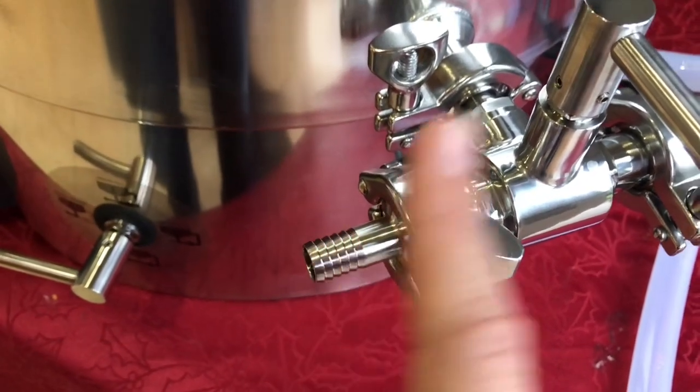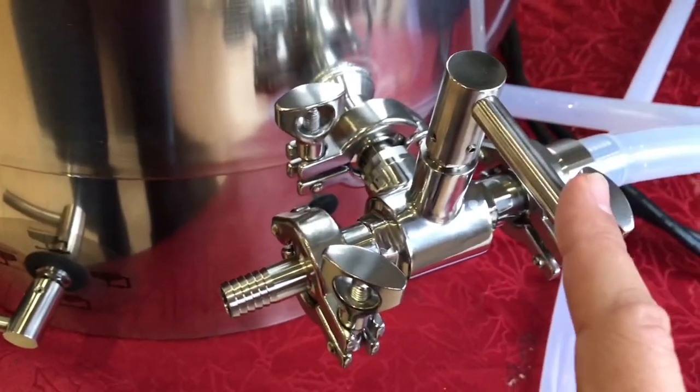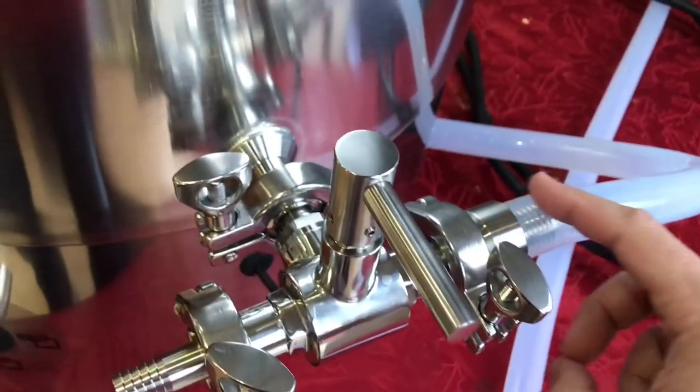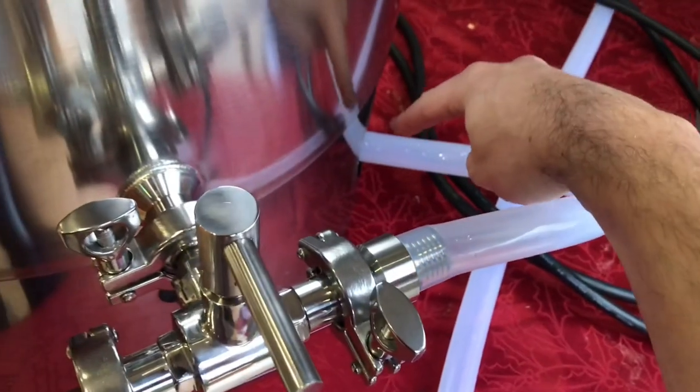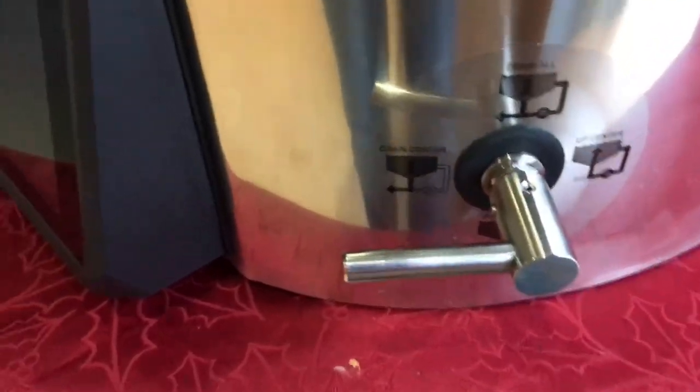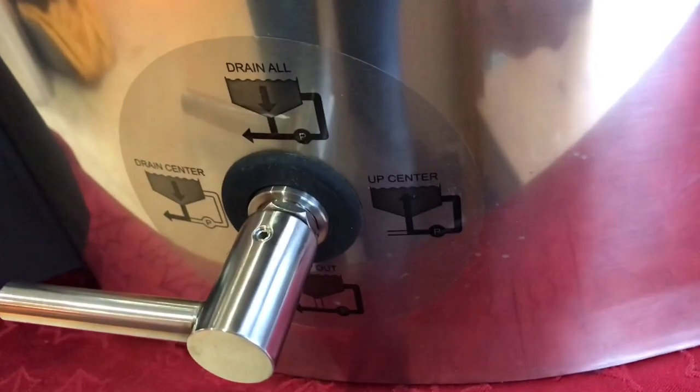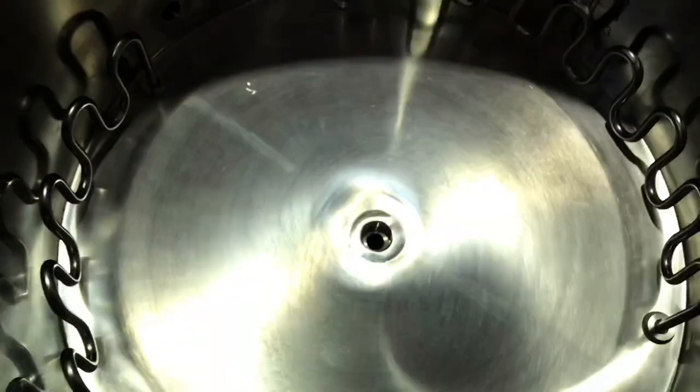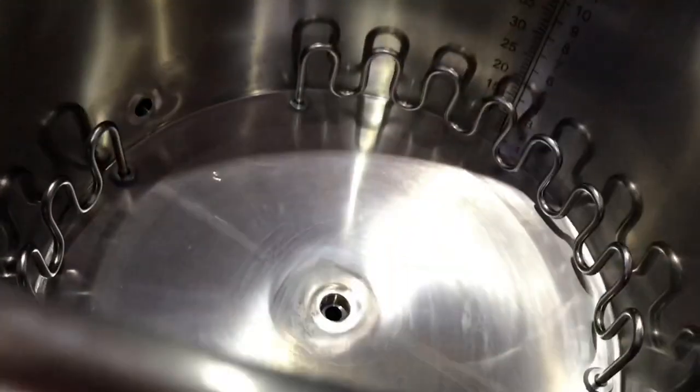You're going to be pumping in from this side using your sparge water. This needs to be set the right way and water goes down there into the pump. You're going to need to go up the center and the water will come up through the pipe and sparge over the grain bed.